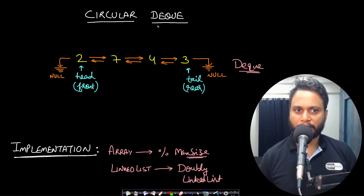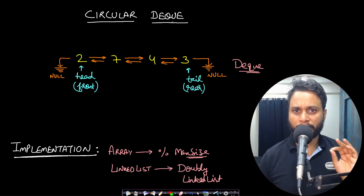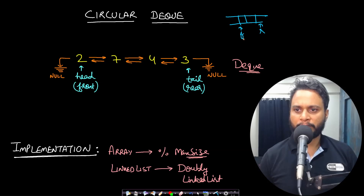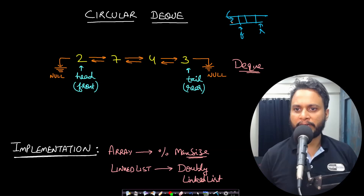Let's first understand what a deque is, and in particular a circular deque. When you think about a deque, it is a doubly ended queue. In a simple queue you have a front and a rear — one end is the rear and one end is the front — so whenever you append an item you append from one end and take out the item from the other end.